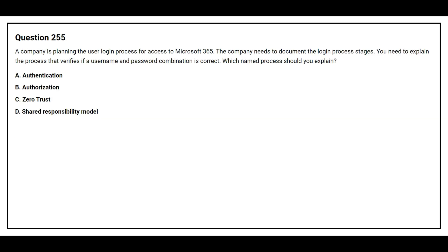Question number 255. A company is planning the user login process for access to Microsoft 365. You need to explain the process that verifies if a username and password combination is correct. Which process should you explain? Option A: Authentication. Option B: Authorization. Option C: Zero Trust. Option D: Shared responsibility model. The correct answer is option A, authentication.